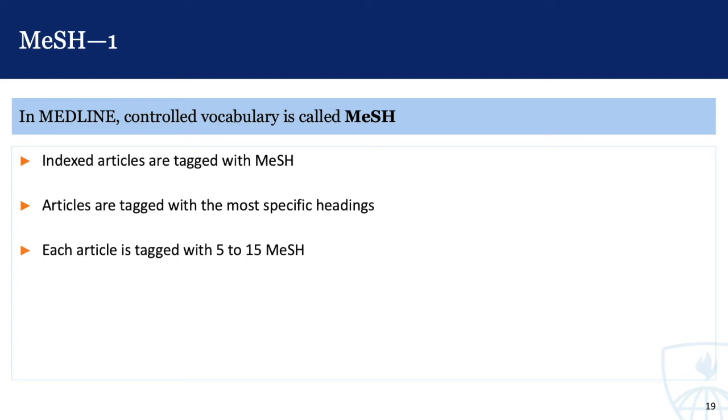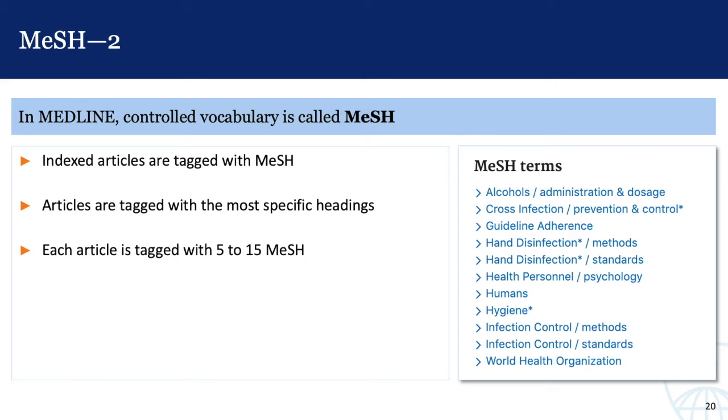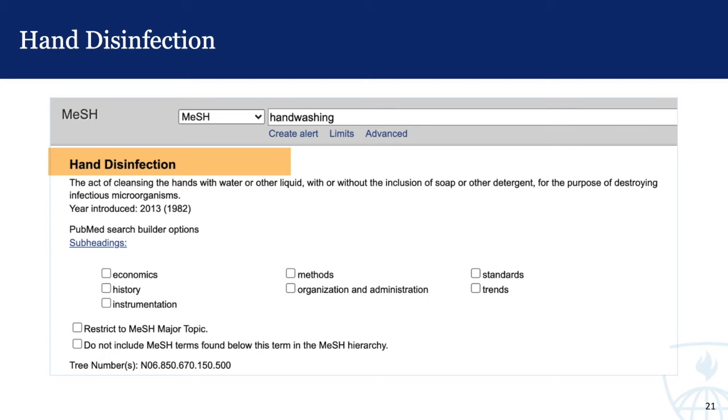Indexers who work for Medline read each article and tag it with the appropriate MeSH. They use the most specific headings that are available and apply somewhere between 5 to 15 MeSH to each article. For articles that address hand washing, they are tagged with the MeSH hand disinfection. What this means for you is when you search using the appropriate MeSH, such as hand disinfection, you'll retrieve articles regardless of the terminology used by the authors.